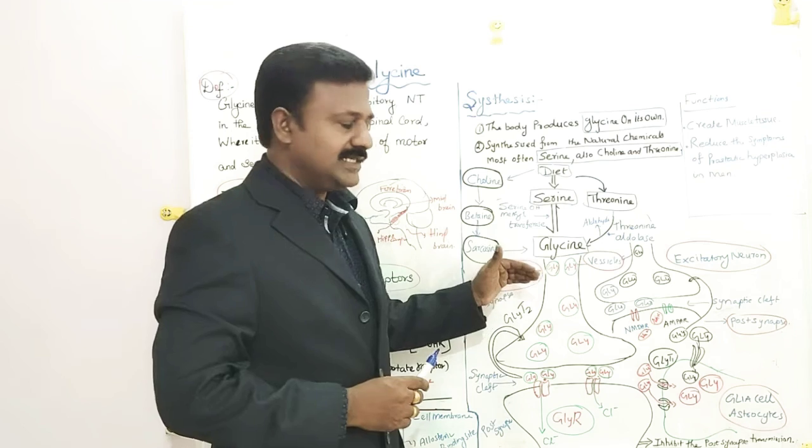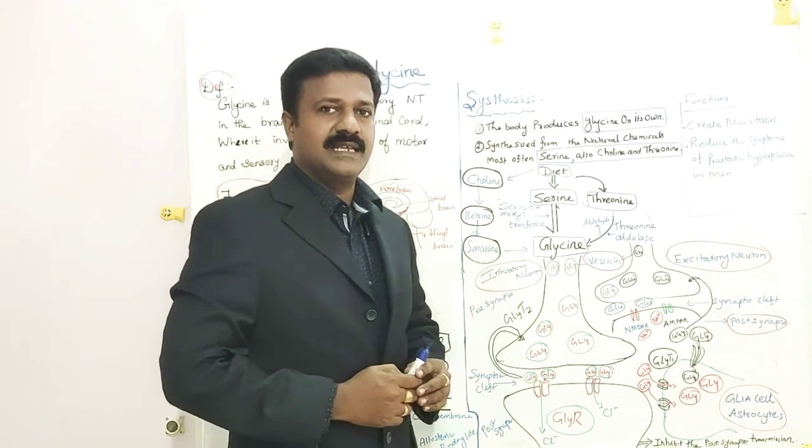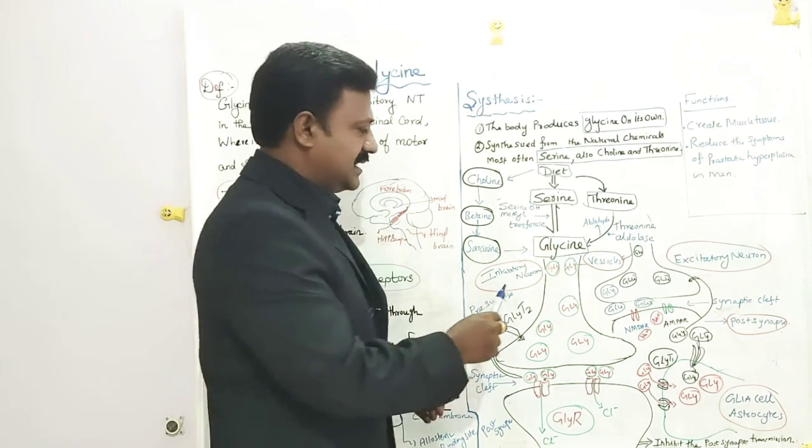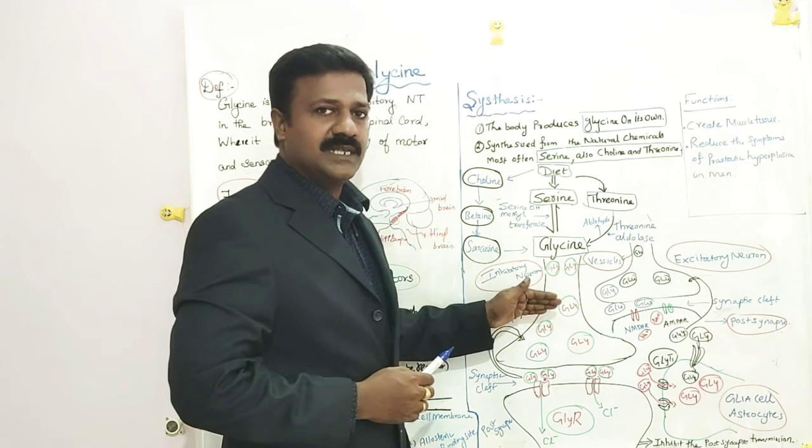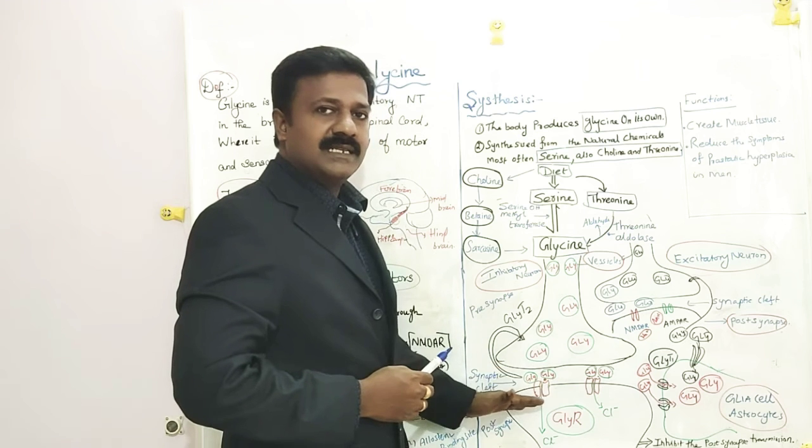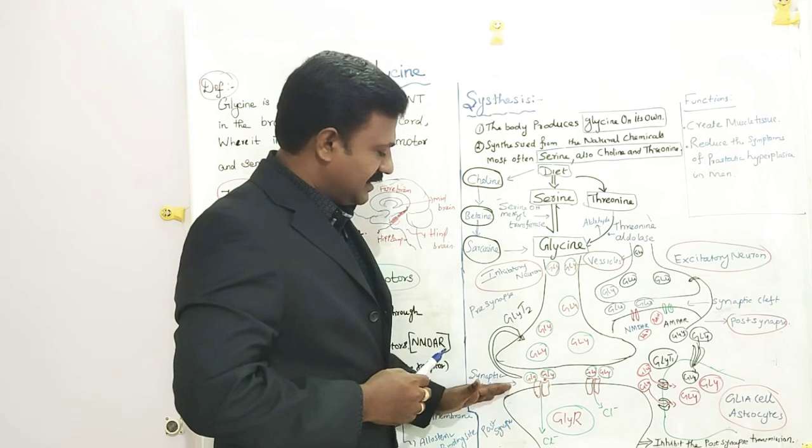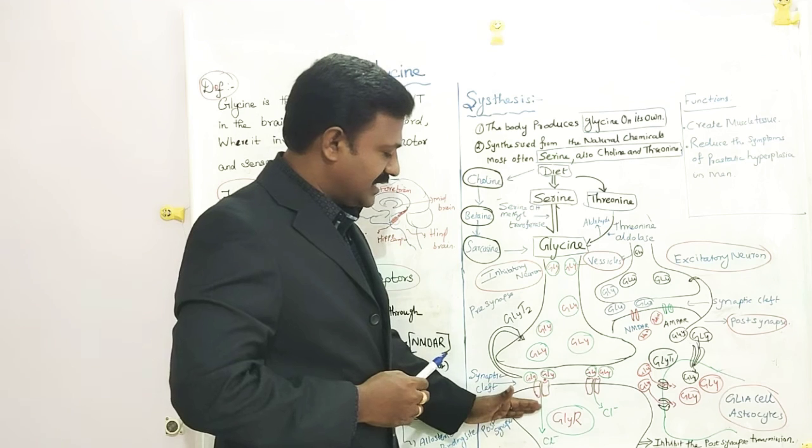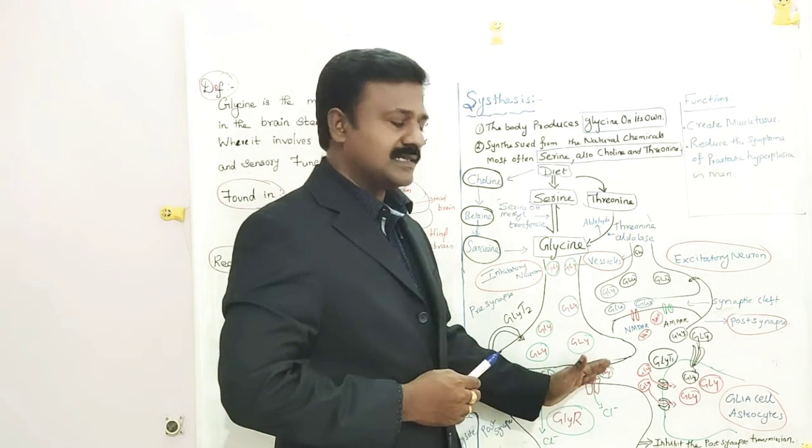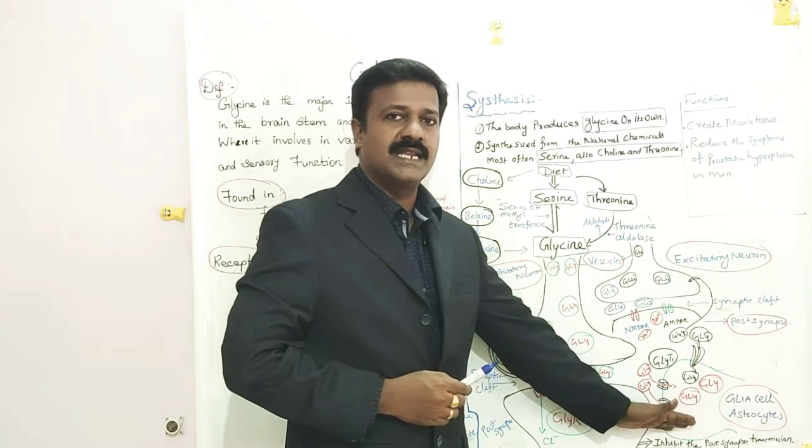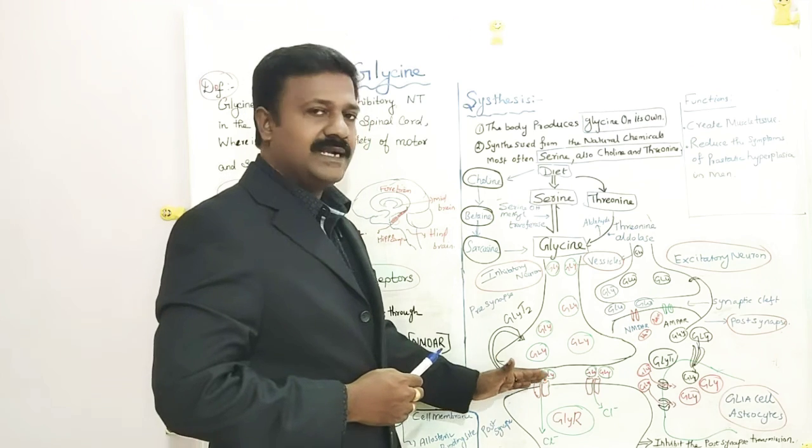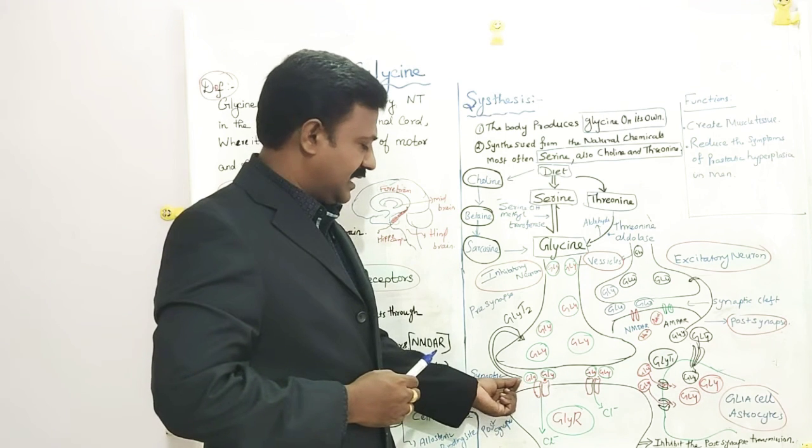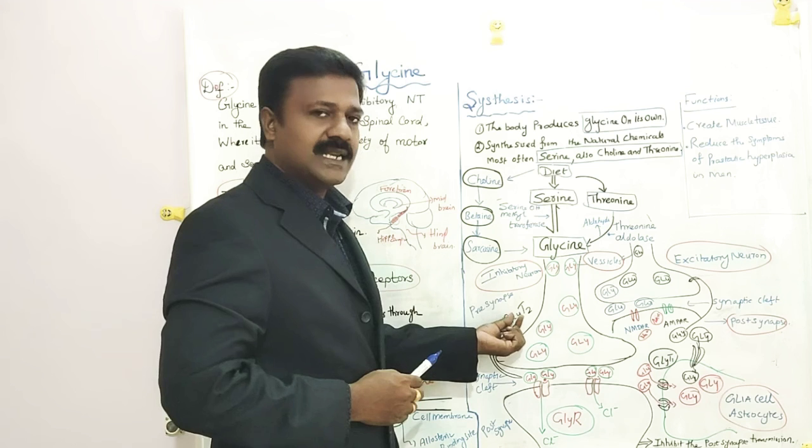Now let's see the transmission. When the impulses are generated in the neuron and transmitted in the axonal part, they stimulate the vesicles of the presynapse and start to transport the Glycine across the synaptic cleft. From the postsynapse, they bind with the ionotropic receptors and start to release the chloride ions. These chloride ions inhibit the postsynaptic transmission.